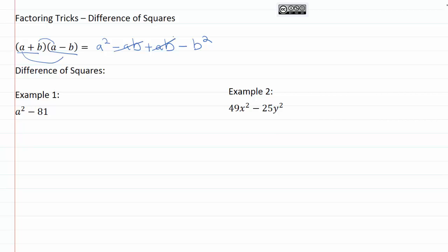We've seen this shortcut before: when we've got something plus something else and then something minus that same something else, we can shortcut it down to the first thing squared minus the second thing squared.